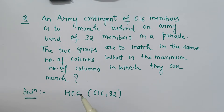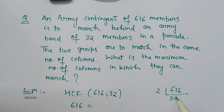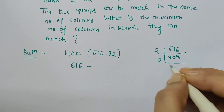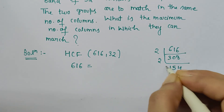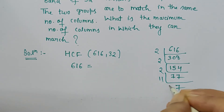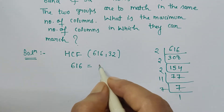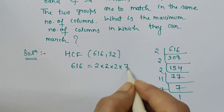So here, how can we write 616 in prime factor form? We prime factorize 616: dividing by 2 gives 308, then 154, then 77, and 77 = 7 × 11, both of which are prime. So 616 can be written as 2 × 2 × 2 × 7 × 11.